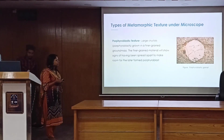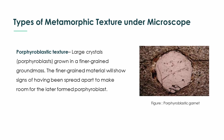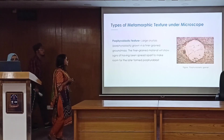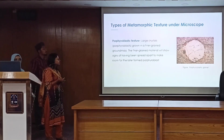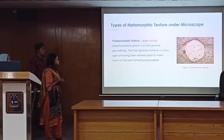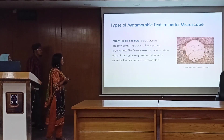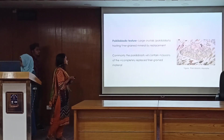If we look at this picture, we can see a porphyroblastic garnet under the microscope. Here, a large porphyroblast of garnet is set in a fine-grained groundmass. The surrounding fine-grained material has been deformed to make room for the growth of the porphyroblast.